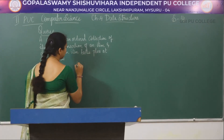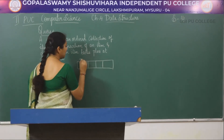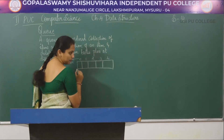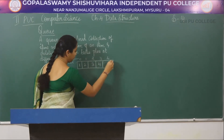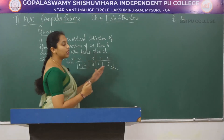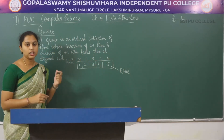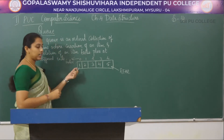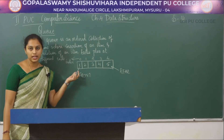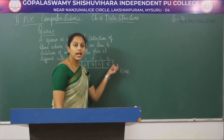Consider a queue as a linear array with index positions containing elements 1, 2, 3, 4 and 5. Insertion of an element takes place at the end of the queue called rear, and deletion of an element takes place at the front end called front. Front is a pointer which contains the location of the element to be deleted and rear is a pointer which contains the location of the item to be added.